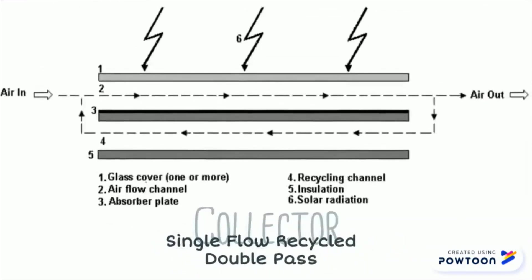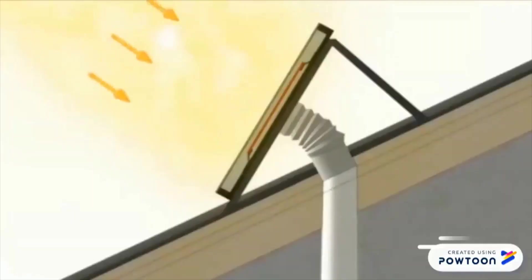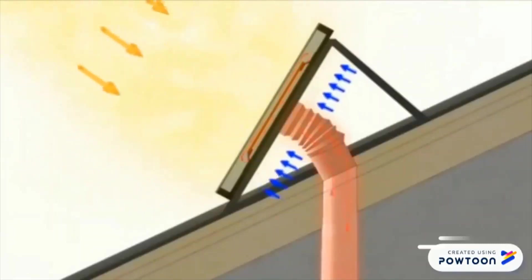Single flow recycle double pass. A portion of heated air is transferred to the bottom channel and then flows into the main air flow channel. There is a single inlet and outlet in the system. Using recycled heated air may improve its efficiency and adjust the air outlet temperature.